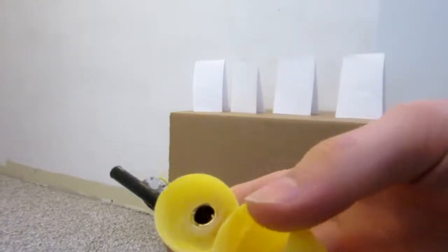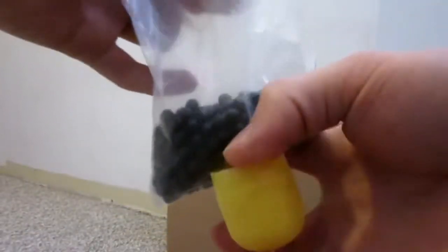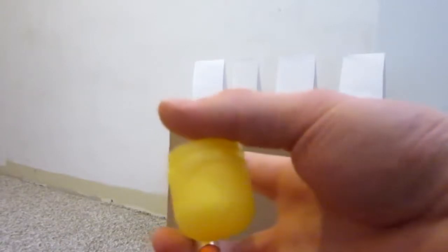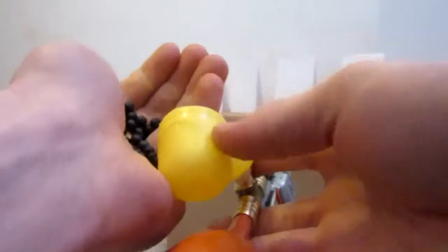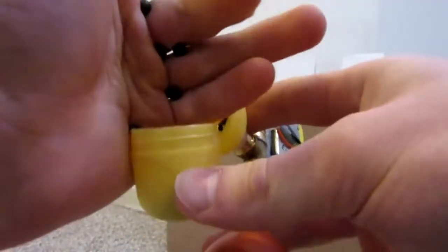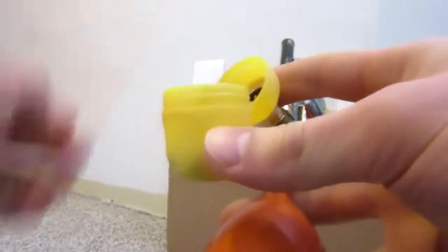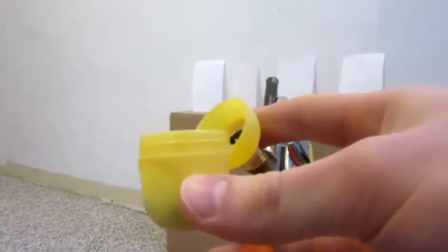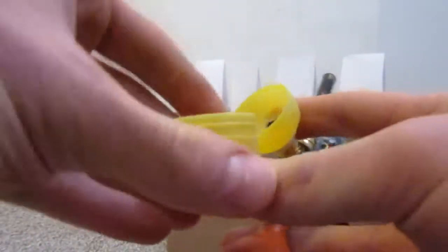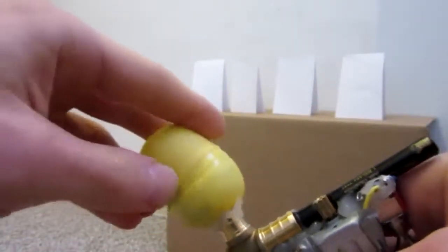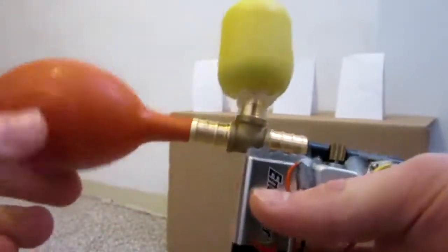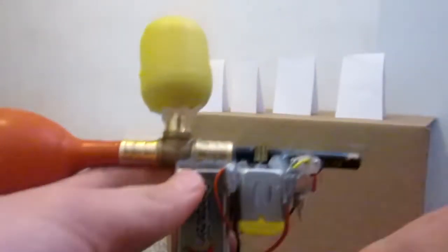So first we're going to go ahead and load it up. So I got my BBs here, and all you got to do is take a nice big old handful of them. And then just go ahead and dump them in the yellow container just like that. Go ahead and add some more. As you can see, now the hopper is pretty darn full. Then go ahead and close it, and now let's get to the shooting test.